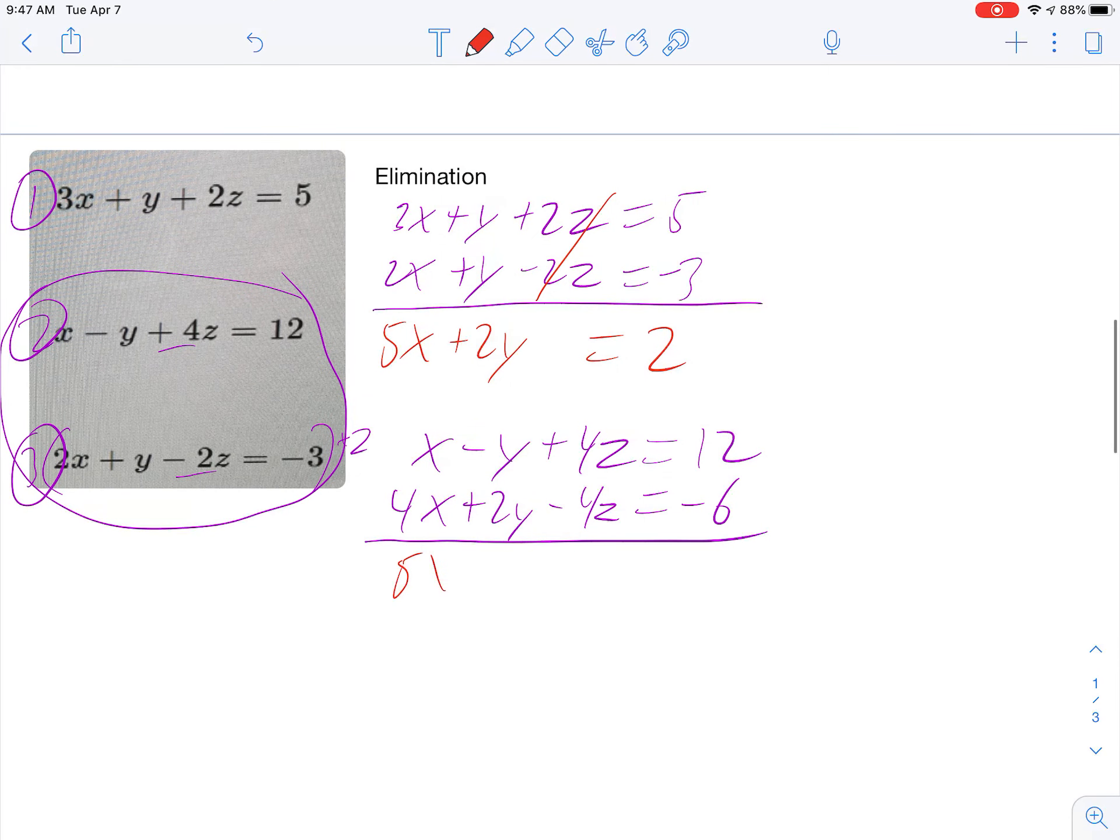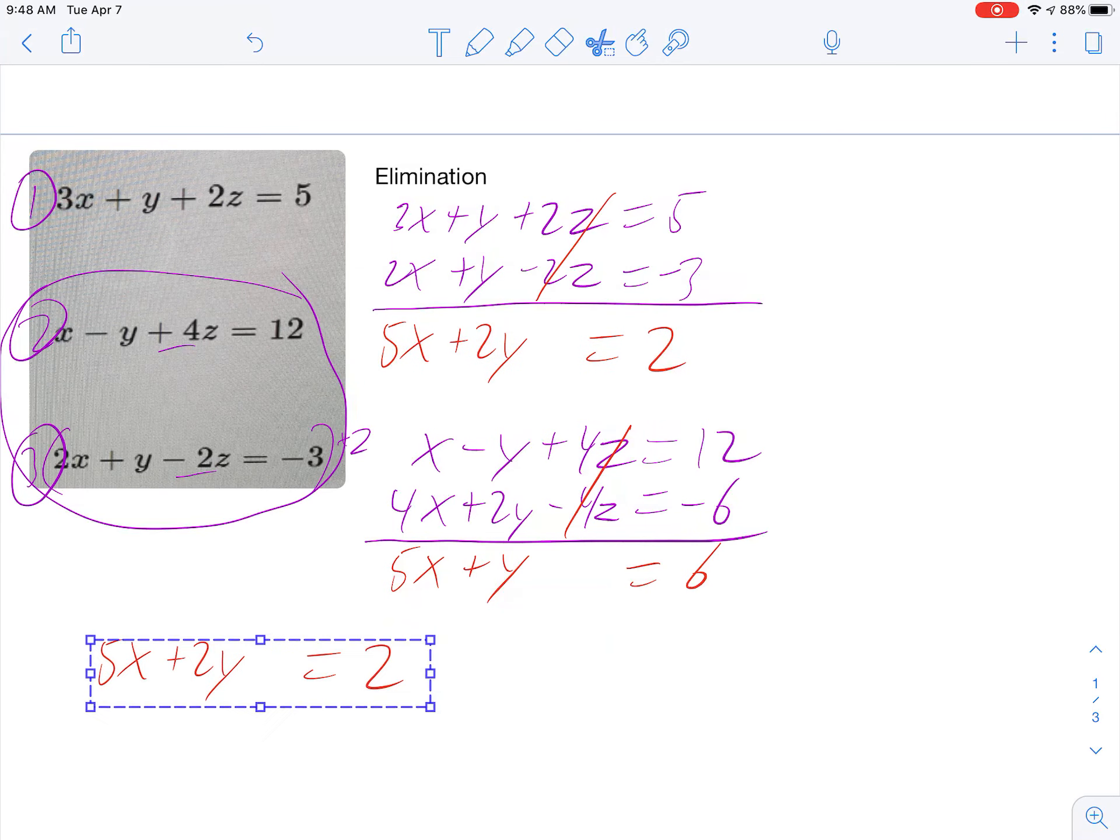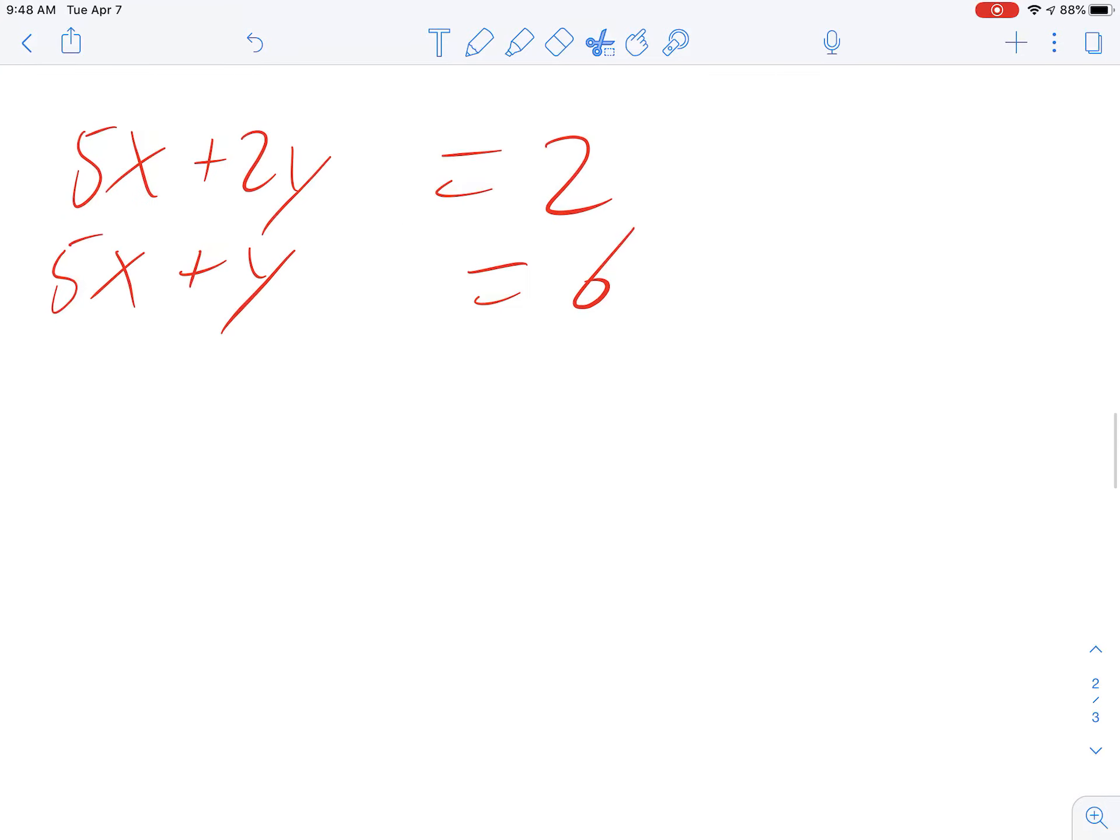And now we can go ahead and add those two together. x plus 4x is 5x. That's negative y plus 2y is 1y. The z's cancel and that equals 6. And so now we've got two equations and two variables, which again was the goal. So now I'm going to recopy those. Don't you wish you could do this on your paper? So now I've got this system of two equations and two variables, which should be pretty easy to solve.